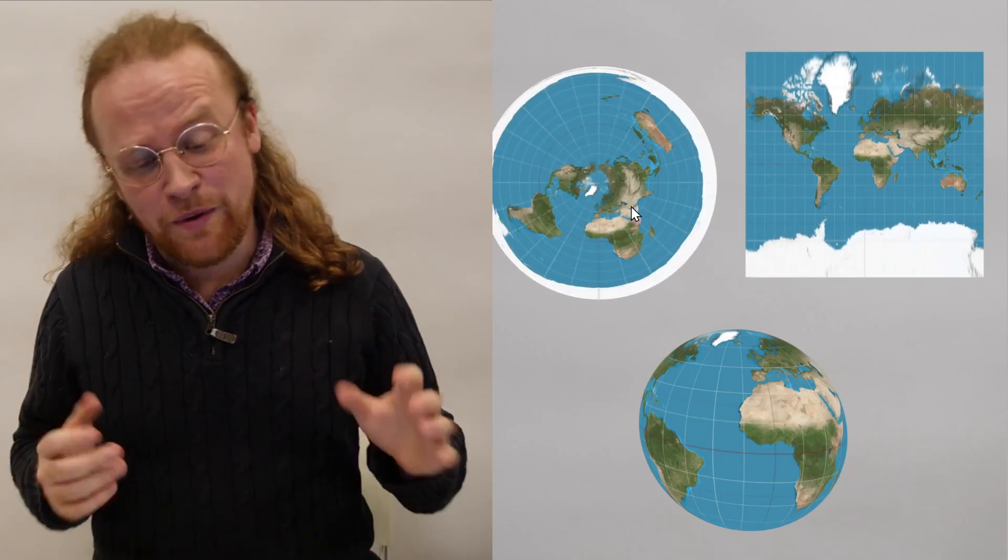For that reason, organizations like the UN will often use different maps such as this one, which some poor people mistake for the Earth itself. It is at least better at representing area, however.